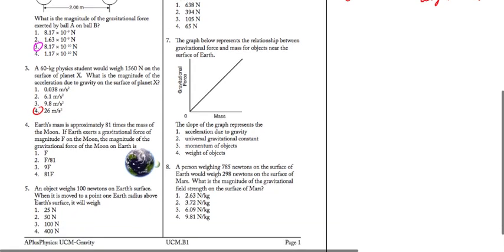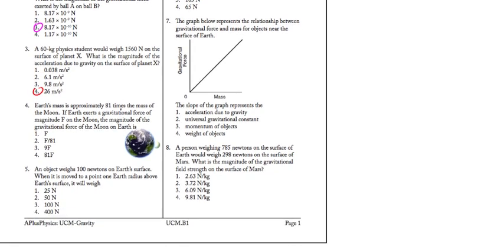Moving on down to number 4. Earth's mass is approximately 81 times the mass of the moon. If the Earth exerts a gravitational force of magnitude F on the moon, what's the magnitude of the gravitational force of the moon on the Earth? Ah, trick question. This is just Newton's third law. Force of object 1 on object 2 is equal in magnitude and opposite in direction to the force of 2 on 1. So our answer here has to be F as well.